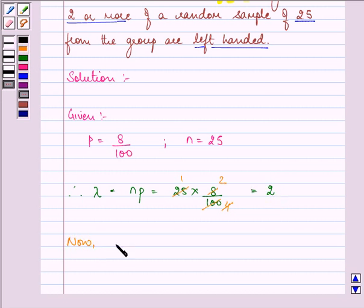Now, probability that 2 or more people from this group are left-handed is equal to probability that X is greater than or equal to 2.